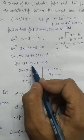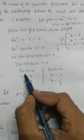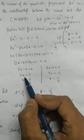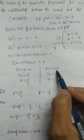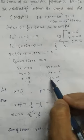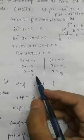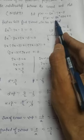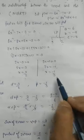Setting each factor to zero: 2x − 3 = 0 gives x = 3/2, and 3x + 1 = 0 gives x = −1/3. Since it is a quadratic polynomial we got two zeros, as expected. Let alpha = 3/2 and beta = −1/3.